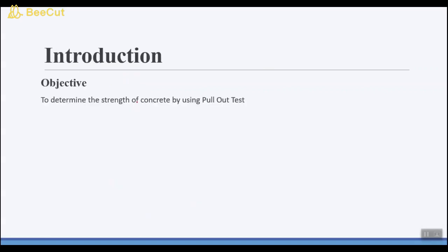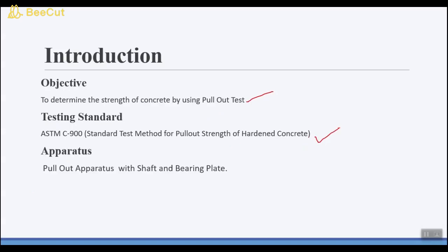Coming towards the introduction part, first is the objective of our today's work. The objective is to find the concrete strength by using pullout technique. The testing standard is ASTM C-900 which is standard test method for pullout strength of hardened concrete, and apparatus which is going to be used in this experiment is pullout apparatus which consists of shaft and bearing plate.